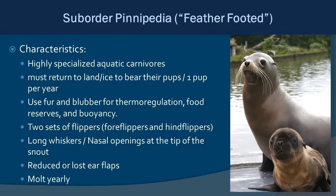Now we turn to Suborder Pinnipedia — the feather-footed — which includes seals and sea lions: highly specialized aquatic carnivores that need to return to land or ice to bear their pups. They typically have about one pup per year. They have both fur and blubber for thermoregulation, and blubber also provides food reserves and helps with buoyancy. They have two sets of flippers, long whiskers, nasal openings at the tip of the snout, reduced or absent external ear flaps depending on species, and they molt yearly.